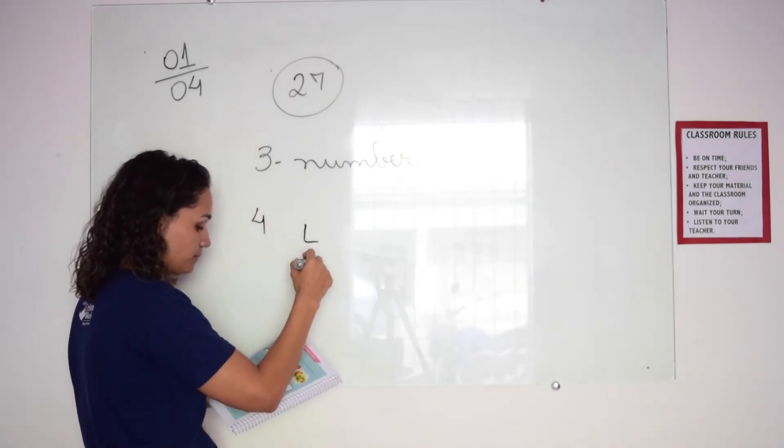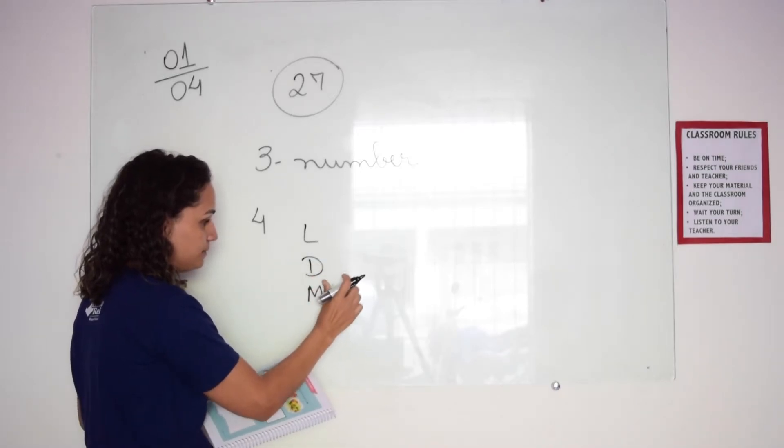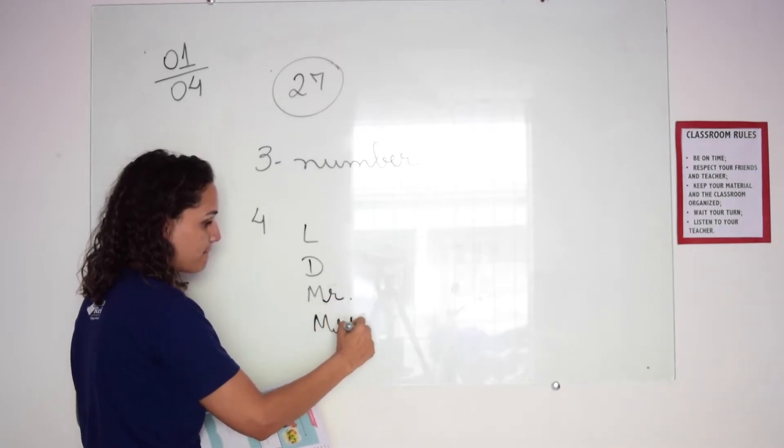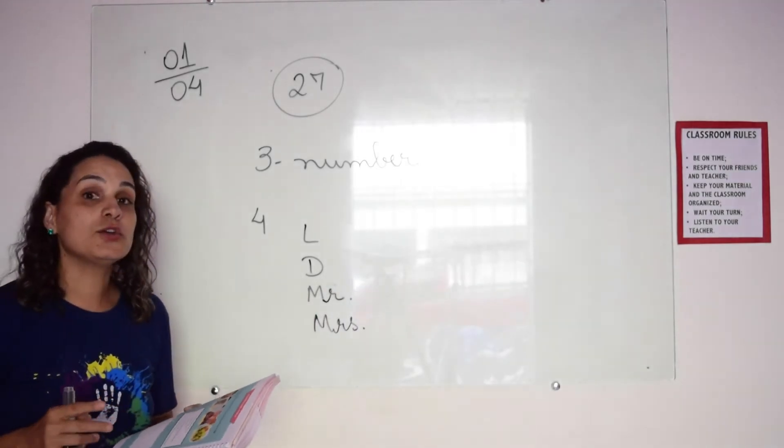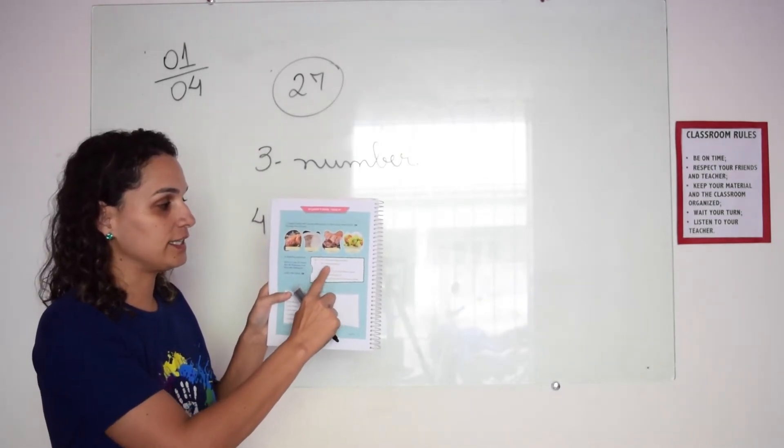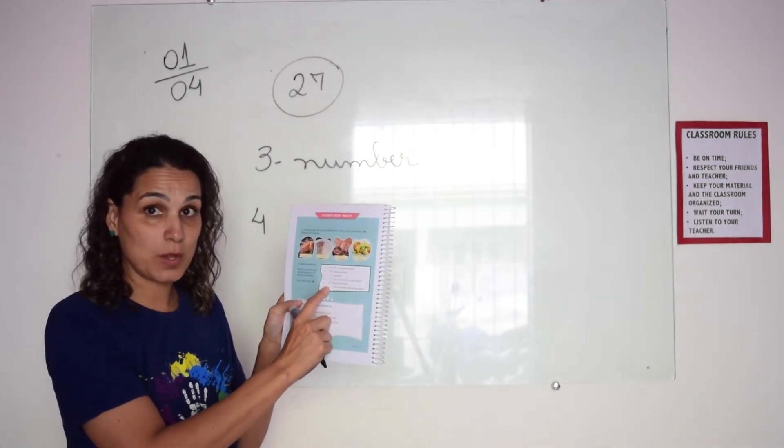Activity number four, you're going to read the sentences. You have the sentences A, B, C, D, E, and F.